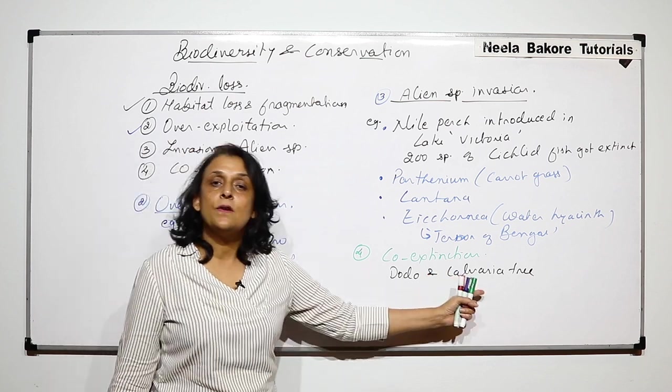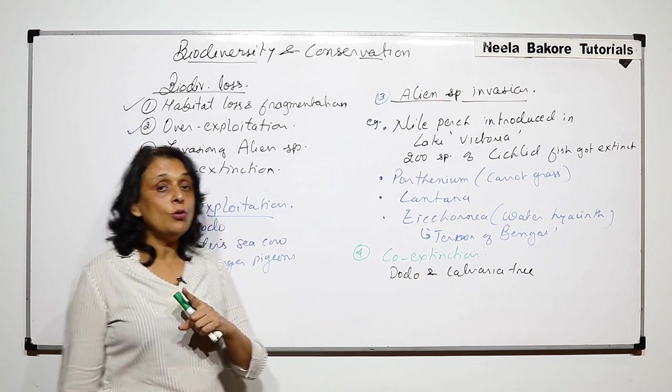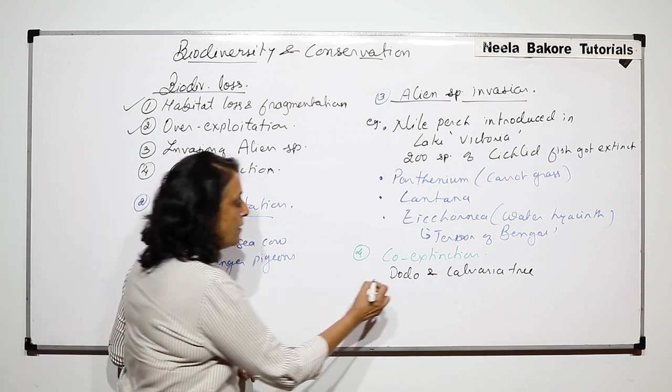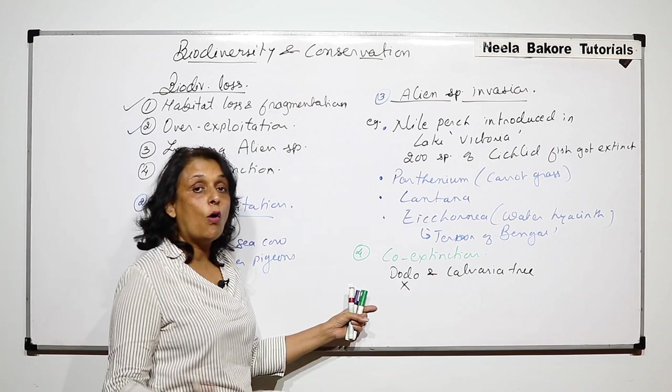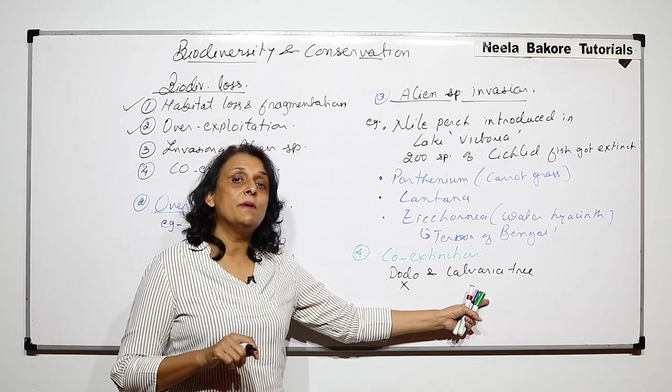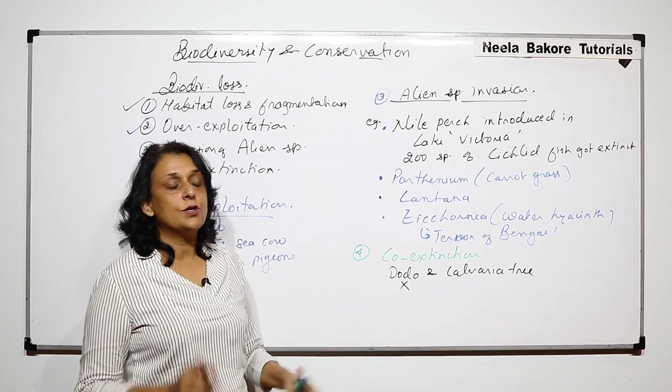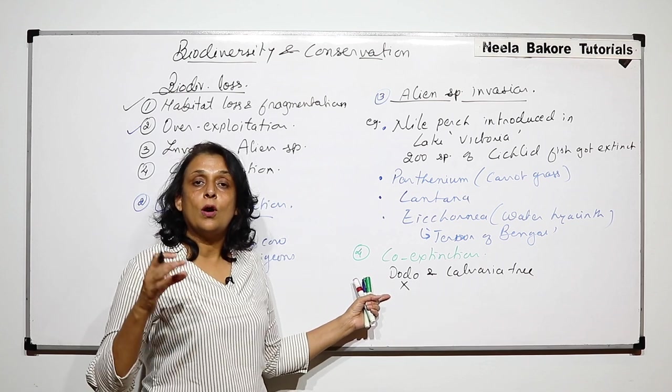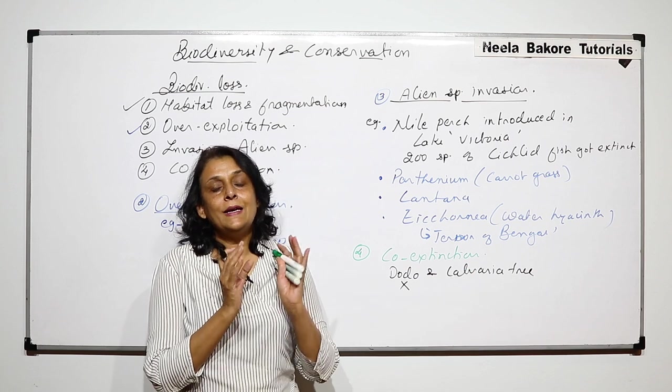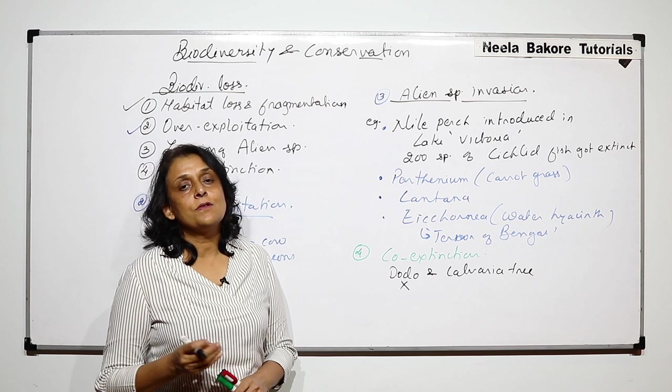The interrelationship was so strong that survival of these two was because of the other one. Dodo survived because the tree was there; the tree survived because Dodo was there. Dodo got extinct because of over-exploitation. If one becomes extinct, the other automatically becomes extinct. In Mauritius, as Dodo got extinct, Calvaria tree, an indigenous variety, also started to decrease. No new Calvaria trees were growing.